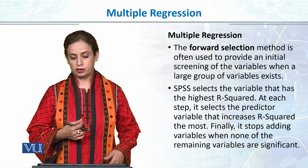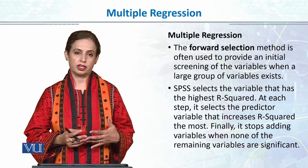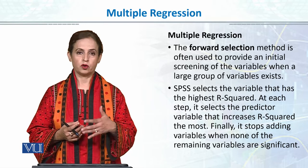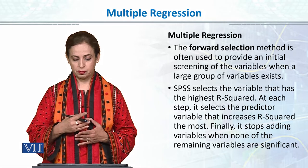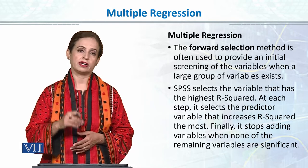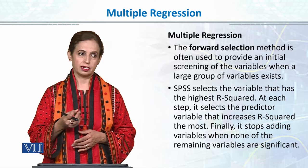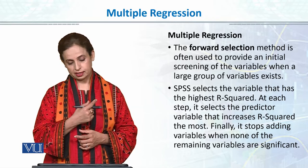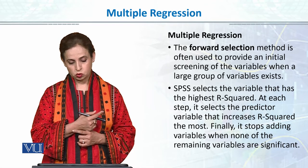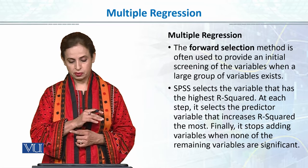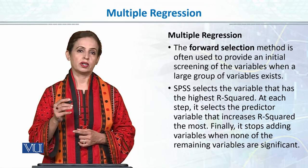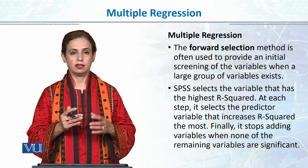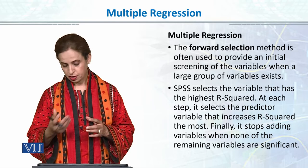Forward selection is often used to provide an initial screening of variables when a large group of variables exists. In forward selection, the variable that has the highest R-squared — that is, the most variance explained in the dependent variable — is selected first. It then selects the predictor variable that increases the explained variance the most and continues adding predictors one at a time until no additional variable adds statistically significant variance.